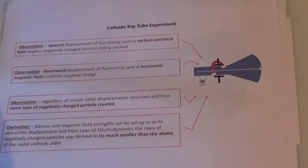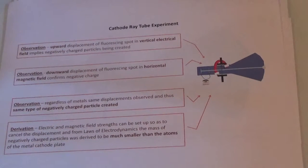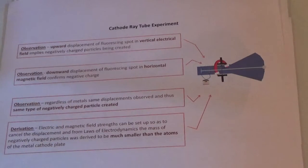The observations made in this experiment are the upward displacement when we have an electrical field, implying negatively charged particles, and the downward displacement with a horizontal magnetic field, also confirming the negative charge. Regardless of the metal, the same displacements are observed, so the same type of negatively charged particle is created.